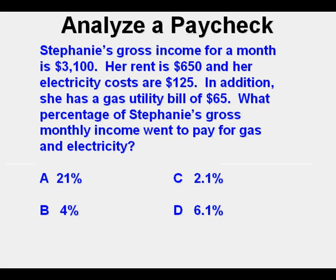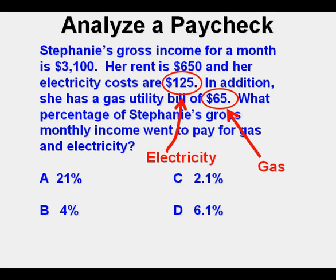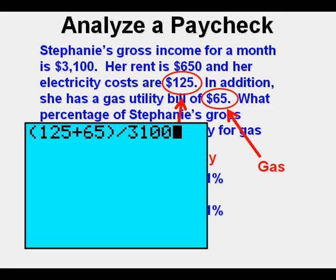Let's analyze a budget item. Stephanie's gross income for a month is $3,100. Her rent is $650 and her electricity costs are $125. In addition she has a gas utility bill of $65. What percentage of Stephanie's gross monthly income went to pay for gas and electricity? This is not strictly a paycheck problem but a budgeting problem, though the same principle applies. We find the percentage by adding the gas and electricity costs together and dividing by the gross income of $3,100 — so that's $125 plus $65, then divide that total by $3,100.